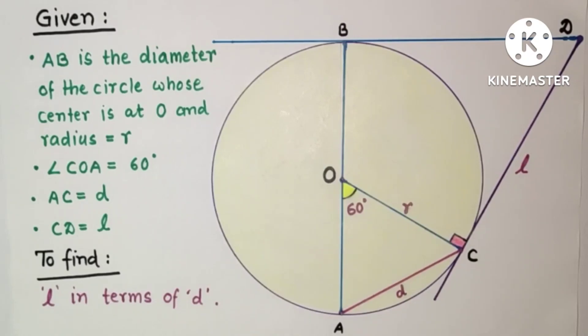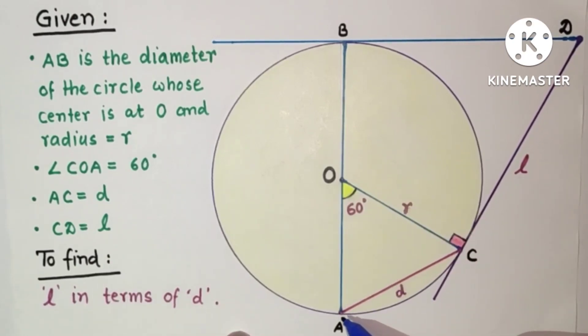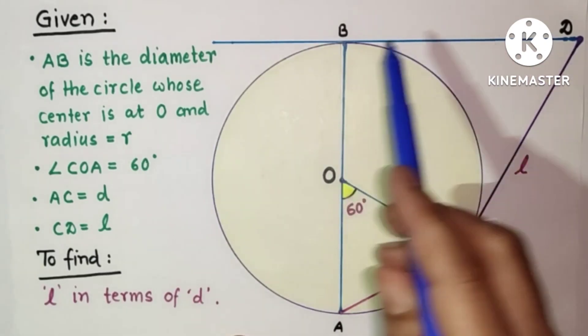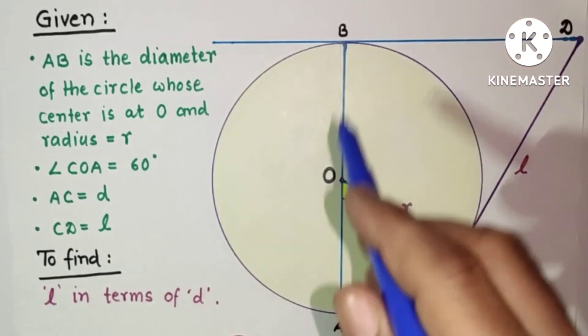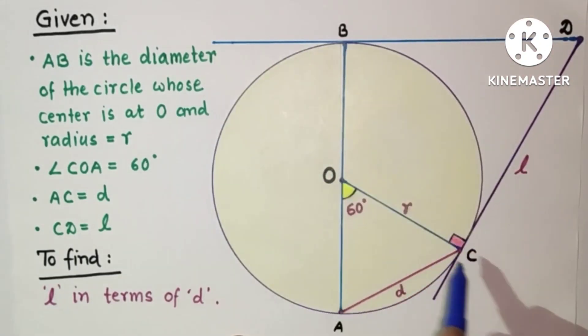In this diagram we are given a circle whose center is O and angle AOC is 60 degrees. DB and DC are tangents which touch the circle at point B and at point C respectively. L is the length of DC tangent. Angle AOC is given as 60 degrees, OC is R, AB is diameter with length 2R, and AC is given as D. We have to find the length L in terms of D.